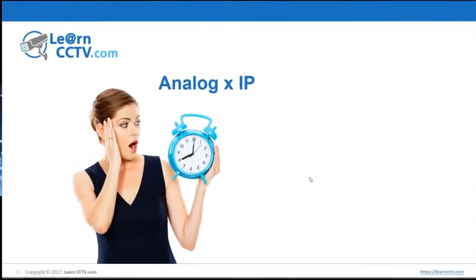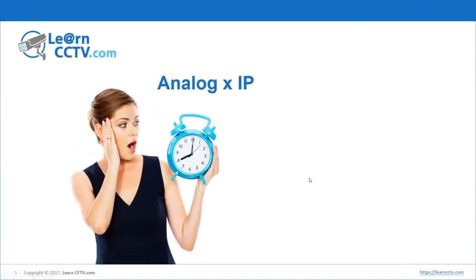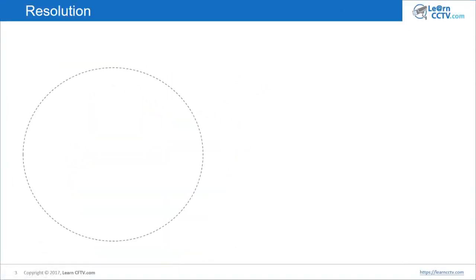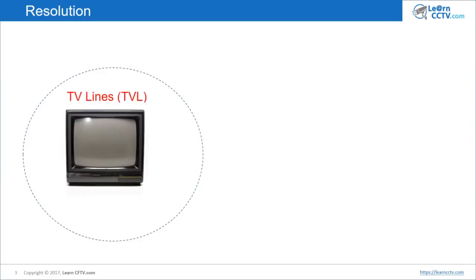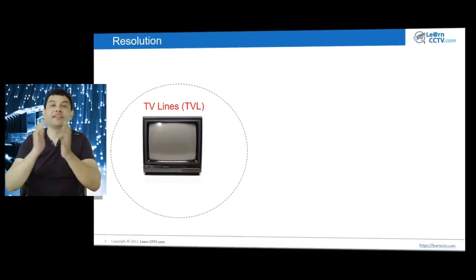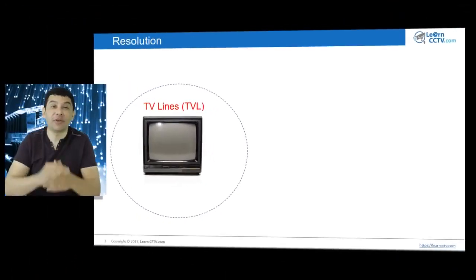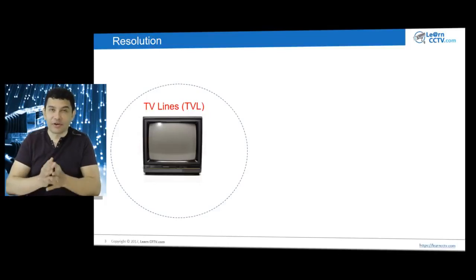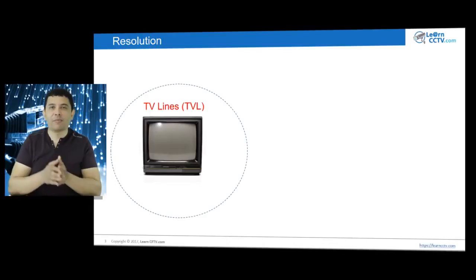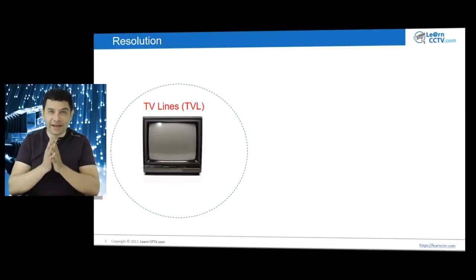Look here on my screen. We see the difference between analog and IP systems. Starting with resolution first — you have your monitor and you have TV lines. TV lines are very important because when you buy an analog camera, a traditional one, and also buy a monitor, you're talking about TV lines.